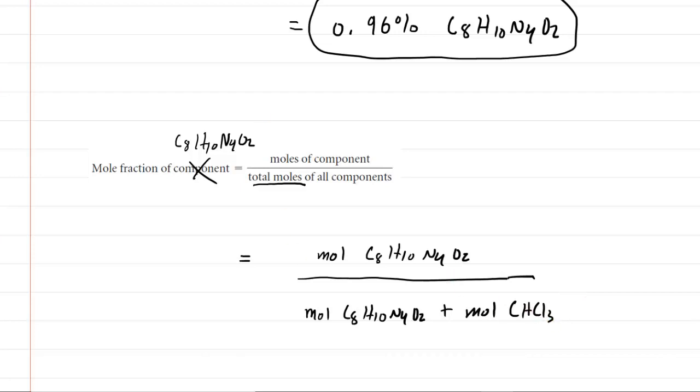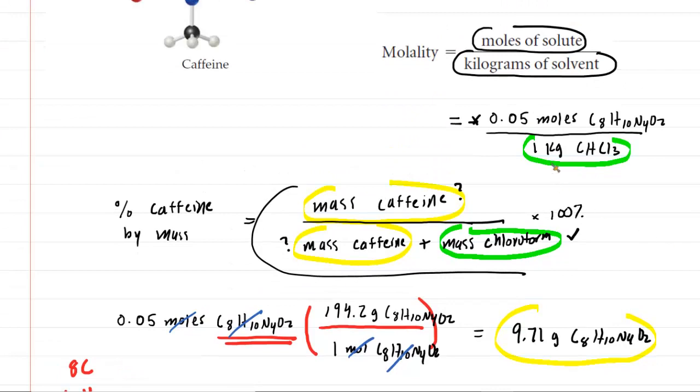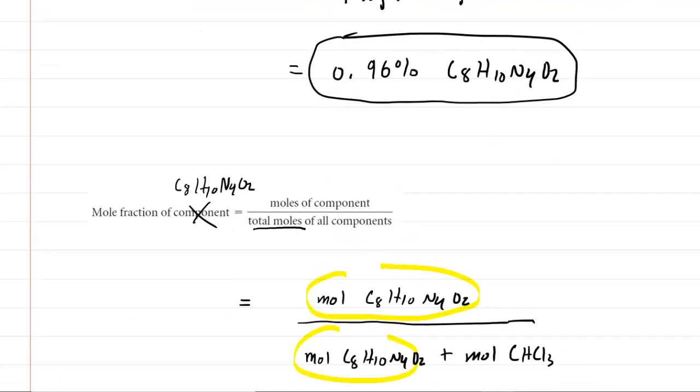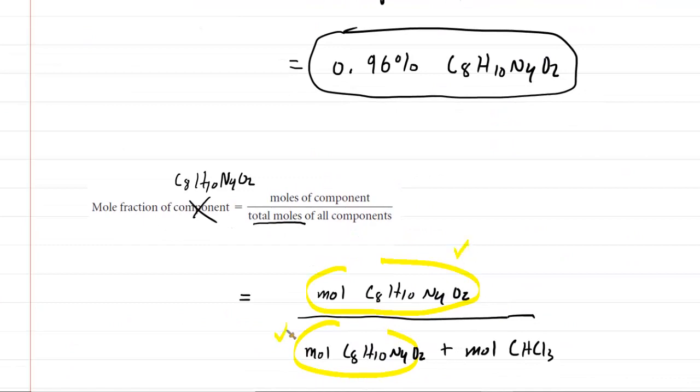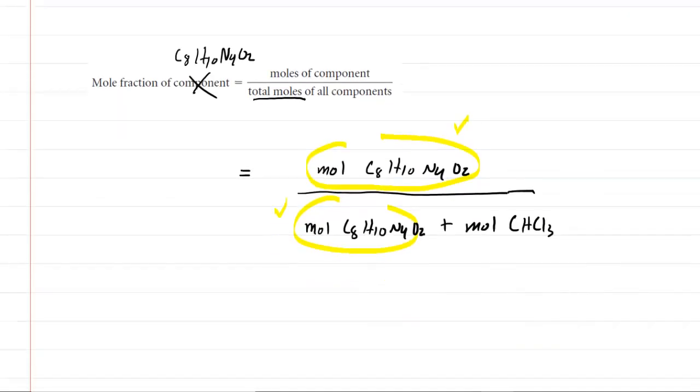Now, again, we know some of this already. Let's go and look for the moles of the caffeine. If we scroll back up, we discovered that the moles of caffeine was simply 0.05. So that's all taken care of. We know that. What we need to figure out is the moles of the chloroform. So that becomes the challenge of part B. So let's write this out.